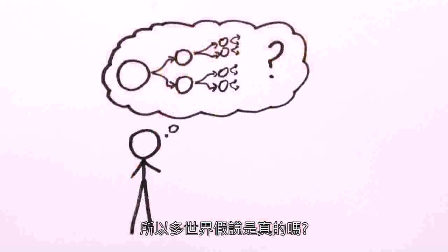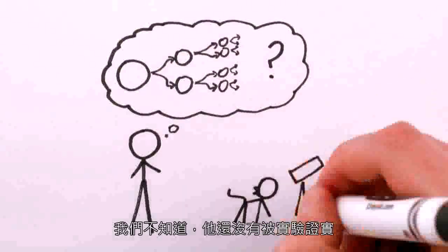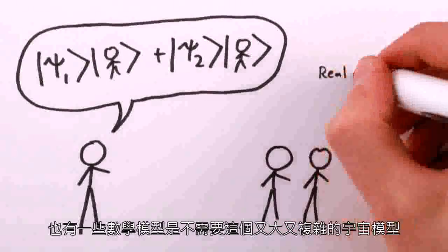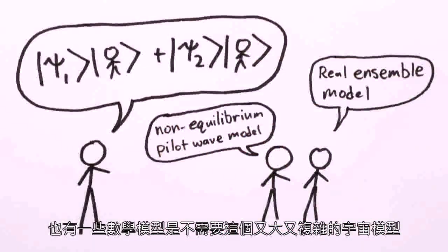There may even be infinitely many branches! So is the many-worlds hypothesis true? We don't know. It hasn't yet been tested experimentally. There's a bit of mathematics that supports it, and there are also a number of mathematical models that don't require such an extravagantly big and complex picture of the universe.